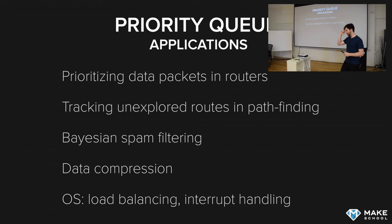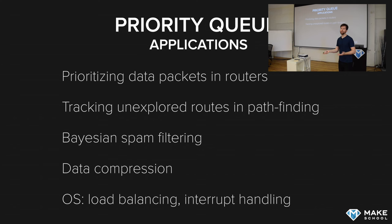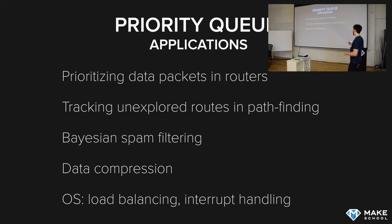Tracking unexplored routes and pathfinding. There are things called searches like A-star search — they're similar to depth-first and breadth-first search but they're modifications. You can use priority queues in those to prioritize which routes you want to explore next. Instead of doing it algorithmically, you can use a heuristic to determine which route is most likely to take you to your destination and then prioritize that route. Bayesian spam filtering — the spam filters that Google uses are probably some kind of Bayesian spam filter.